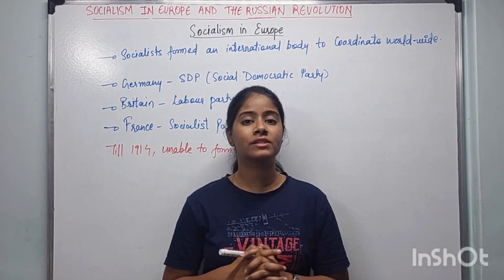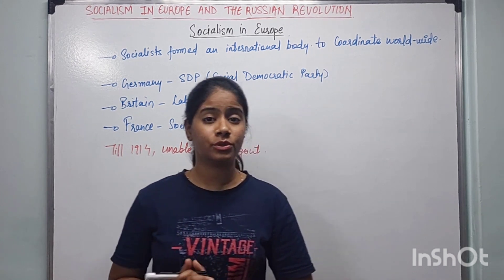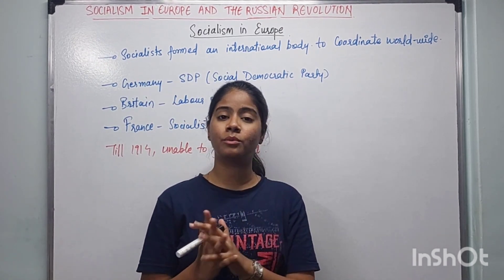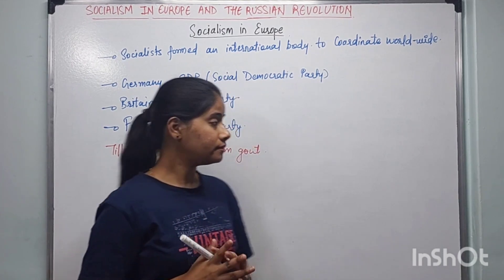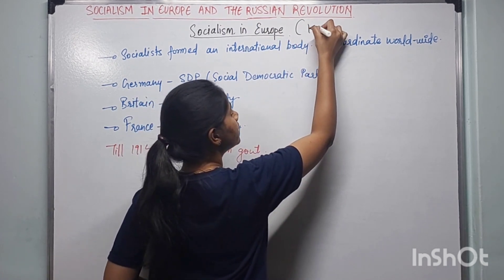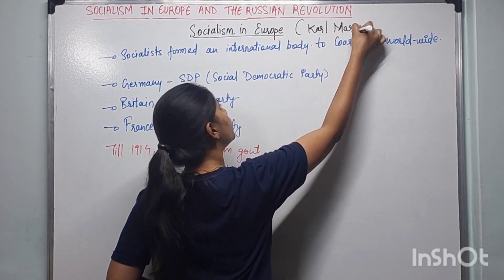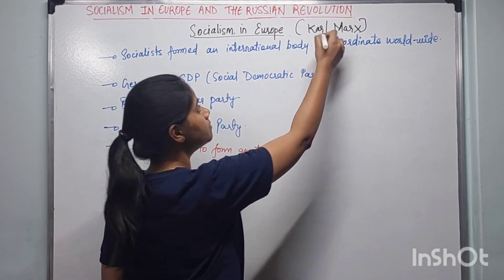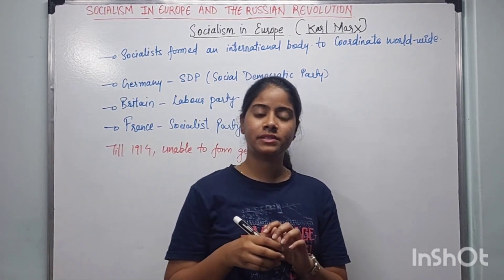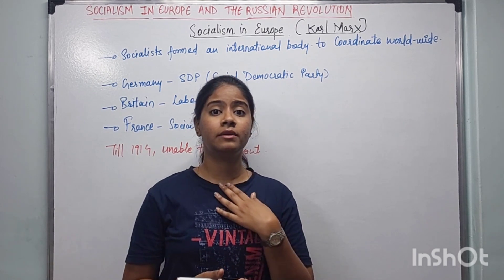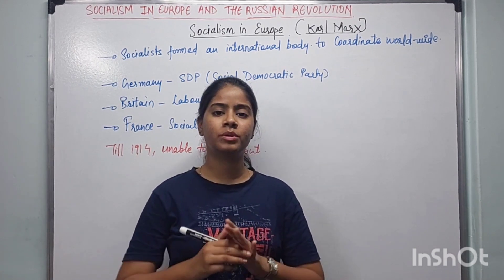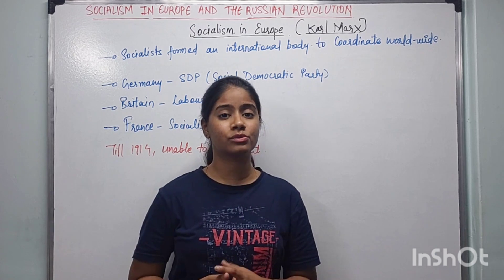This lecture is about Socialism in Europe — let us see how it spread in Europe. Many people supported socialism, but the most famous among them was Karl Marx. As Karl Marx's supporters increased and the socialist population grew, they did not yet have power in any country in Europe, but many European countries were now coming to know and support socialism.